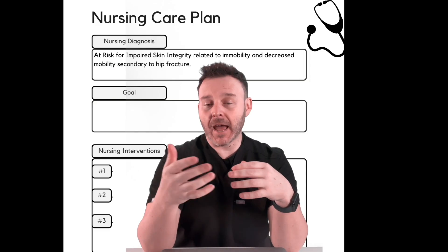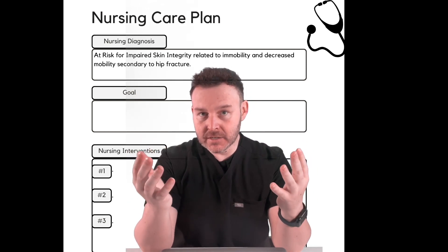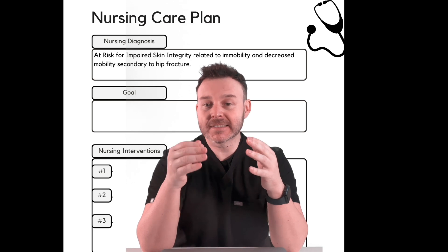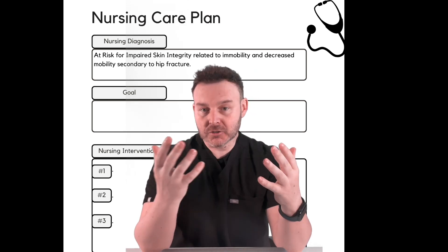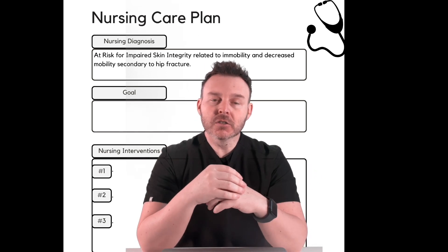Let's come up with another nursing diagnosis using NANDA — this time an at-risk one. The patient is lying in bed and not ambulating much, so they could be at risk for a DVT, for example. For this diagnosis, I want to use: at risk for impaired skin integrity related to immobility and decreased mobility secondary to hip fracture. They're definitely at risk for developing a pressure injury if we don't take proper precautions.